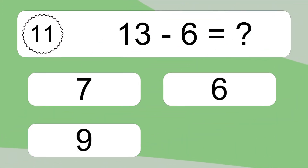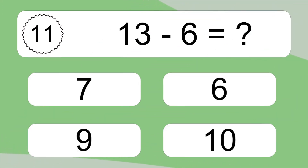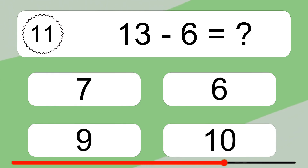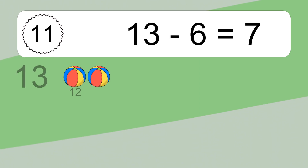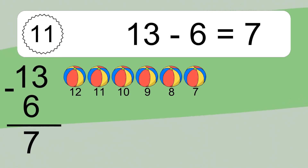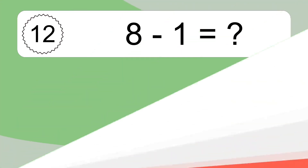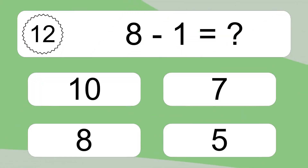13 minus 6 equals what? 13 minus 6 equals 7. Let's count it. 12, 11, 10, 9, 8, 7.